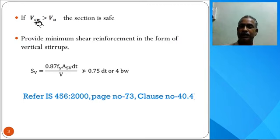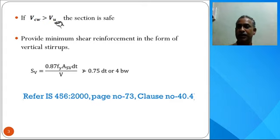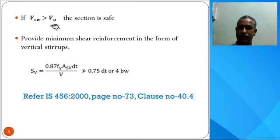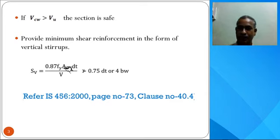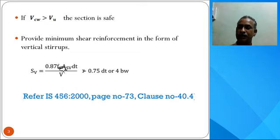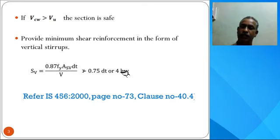Once we find VCW (shear capacity uncracked in flexure at support), this value should be greater than the maximum shear force due to external loads; otherwise we increase the depth. We then provide minimum shear reinforcement in the form of vertical stirrups, similar to RCC, using two-leg vertical stirrups: spacing = 0.87 × Fy × Asv × DT / V. This spacing should be less than or equal to 0.75 × DT or 4 × BW.